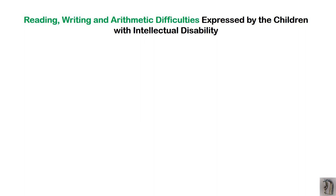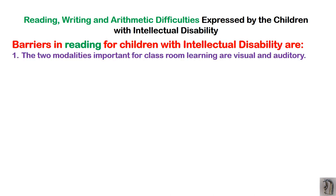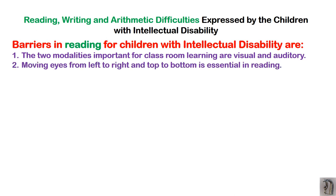Now let us understand the reading and writing expressed by children with intellectual disability before we move to adaptation. One concept to remember is the barriers in reading difficulty. There are two modalities very important for classroom learning: visual and auditory. Without this development, children cannot read, because they have to see and listen. Eye movement from left to right and top to bottom is essential in reading.